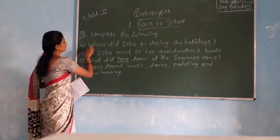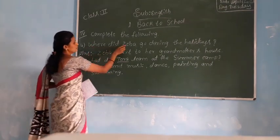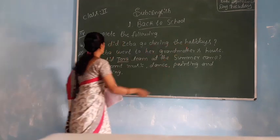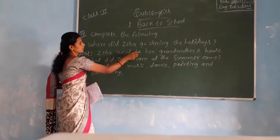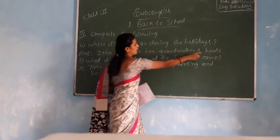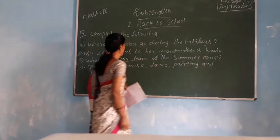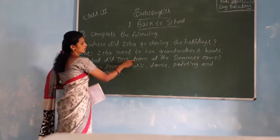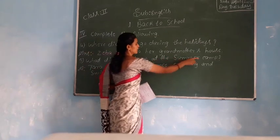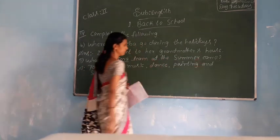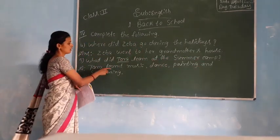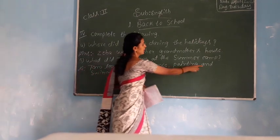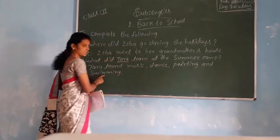Observe here. Where did Jeeva go during the holidays? Jeeva went to her grandmother's house. What did Tara learn at the summer camp? Tara learned music, dance, painting, and swimming.